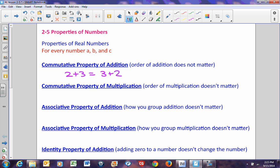The commutative property of multiplication is essentially the same thing, but with multiplication. The order of multiplication does not matter. 2 times 3 is the same as 3 times 2. The answer is still 6.